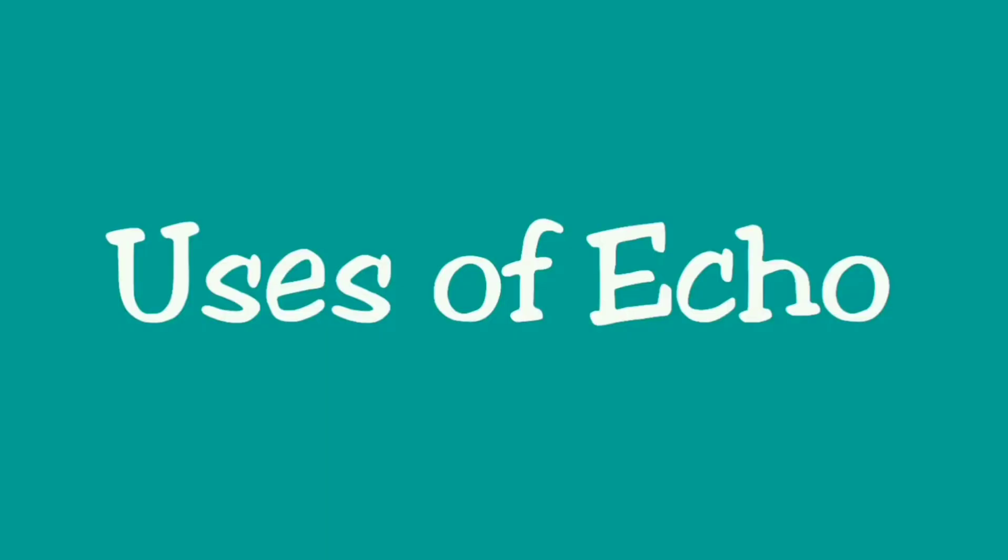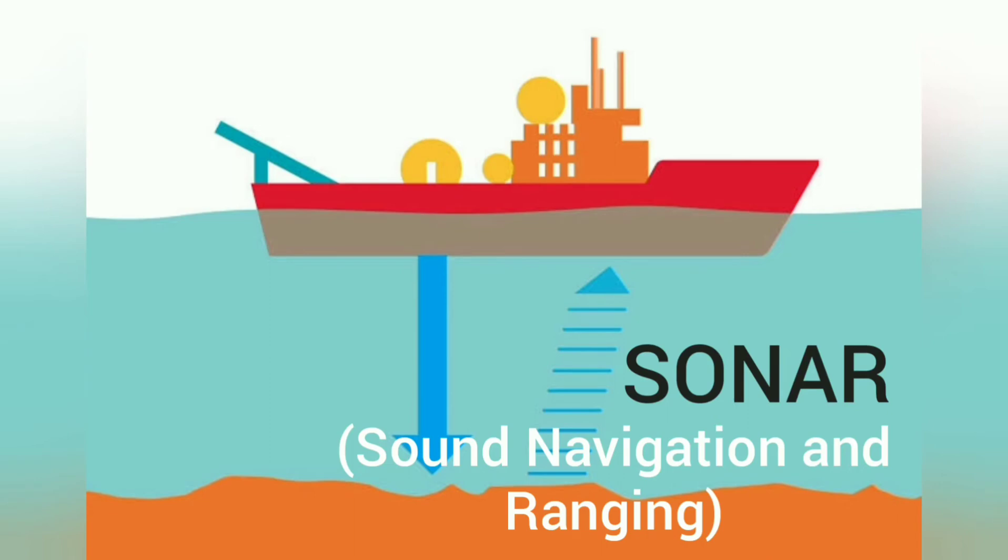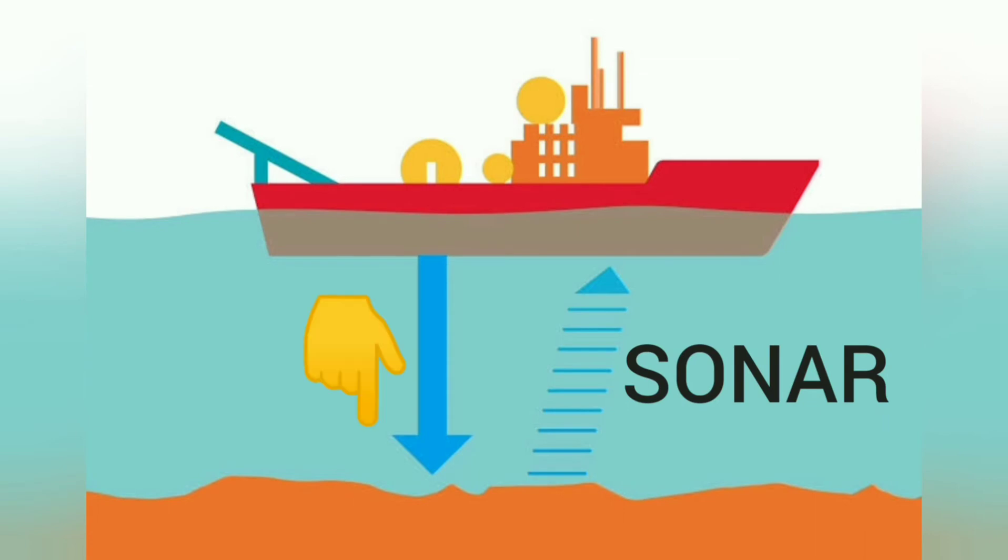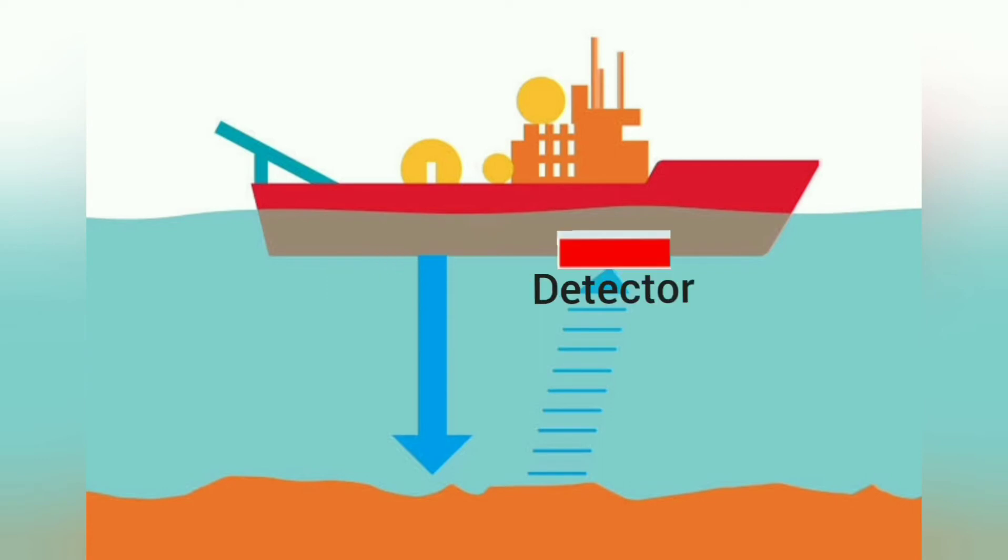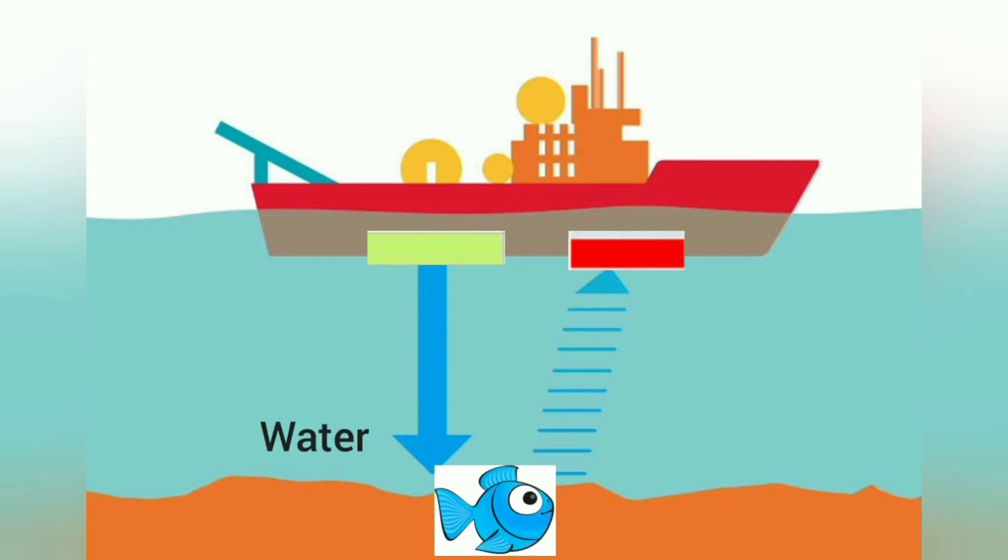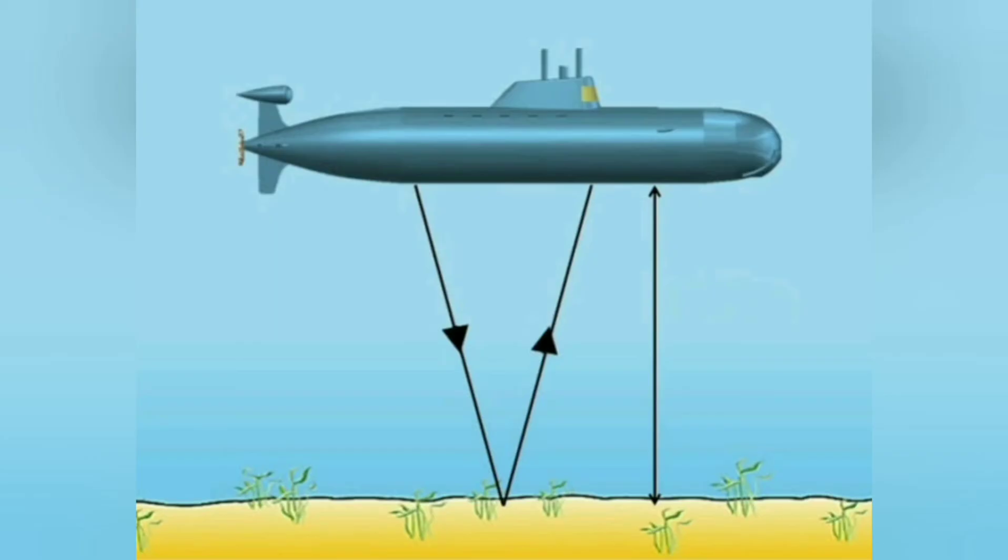Uses of echo: Sonar is based on the principle of reflection of sound waves, that is echo. It is used to measure the distance and speed of underwater objects. It is a device that uses ultrasonic waves. Sonar consists of a transmitter and a detector and is installed in a boat or ship. The transmitter produces and transmits ultrasonic waves. These waves travel through water and after striking the object on the seabed, it gets reflected back and is sensed through a detector.